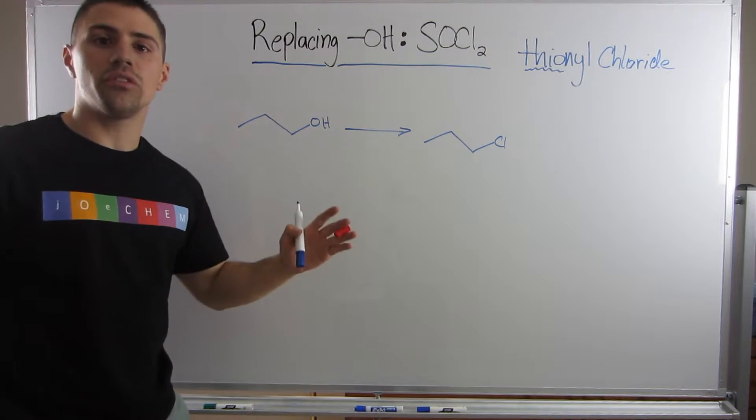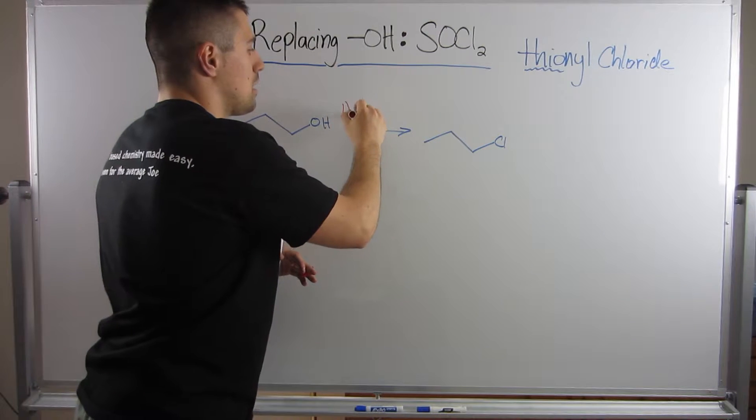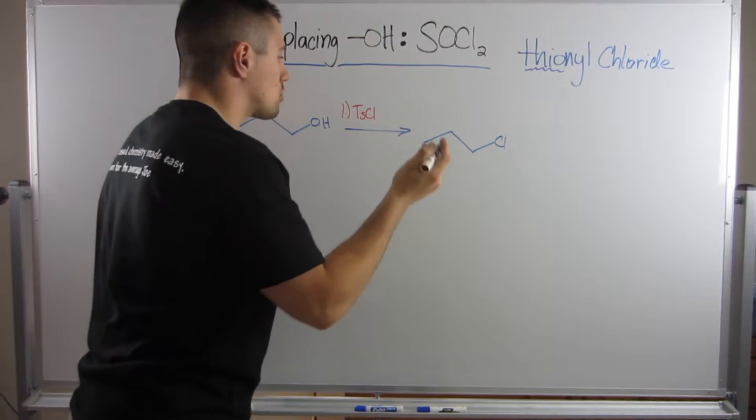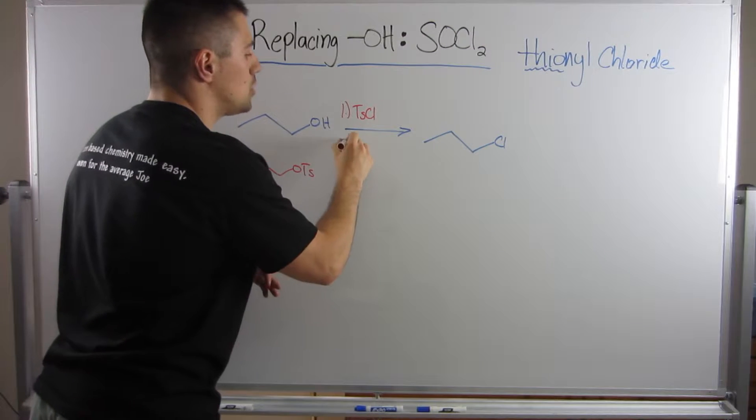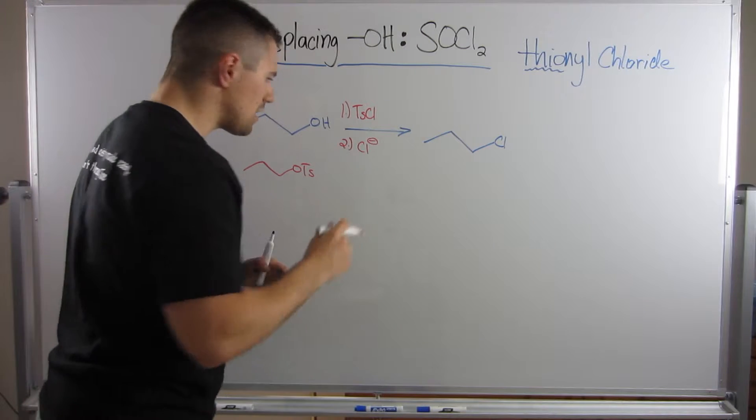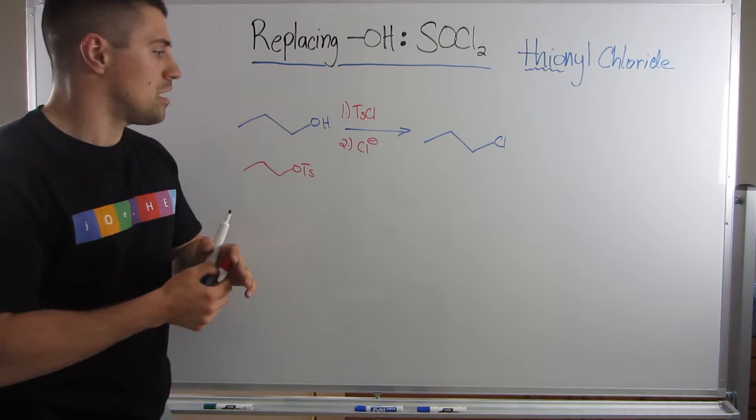So in the days before we knew of the magic powers of SOCl2, you probably would have thrown in some tosyl chloride to make this OTs, and then you would have thrown in Cl-, you know, NaCl and DMSO, some good solvent, whatever.